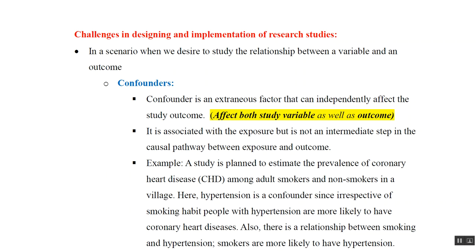What is a confounder? A confounder is an external factor that can independently affect the study outcome. It affects both the study variable as well as the outcome. It is associated with the exposure, but it is not an intermediate step in the causal pathway between exposure and outcome.